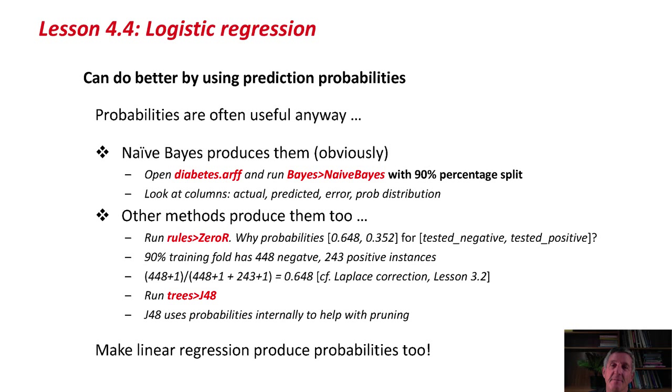One of the things about data mining is that you can sometimes do better by using prediction probabilities rather than actual classes. Instead of predicting whether it's going to be yes or no, you might do better to predict the probability with which you think it's going to be yes or no. The weather is 95% likely to be rainy tomorrow, or 72% likely to be sunny, instead of saying it's definitely going to be rainy or definitely going to be sunny.